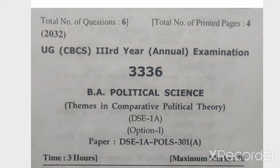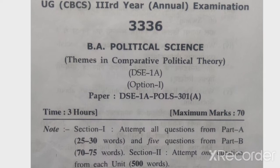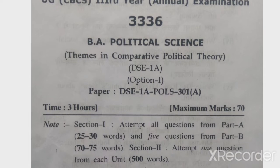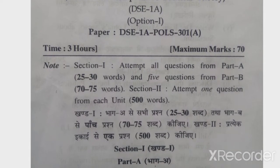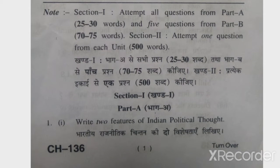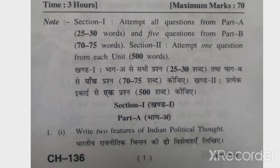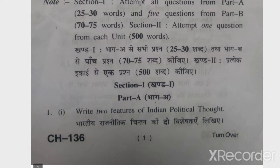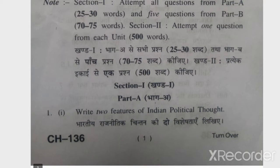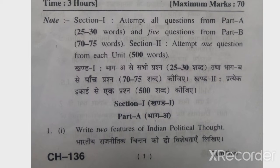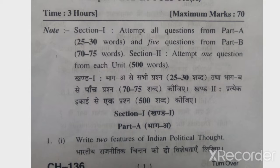This is the BA Political Science paper — Themes in Comparative Political Theory, Himachal Pradesh University. This paper is 70 marks. We have Section 1, Part 1.